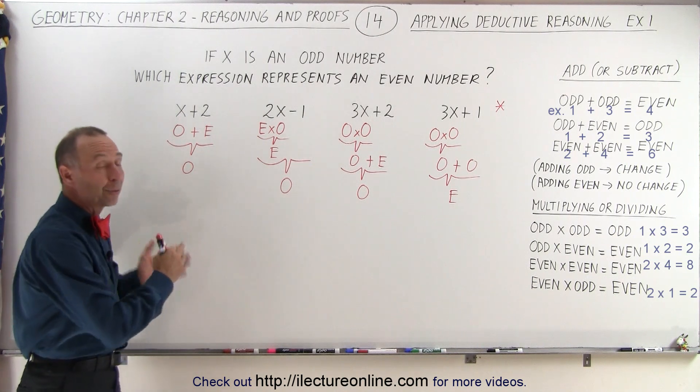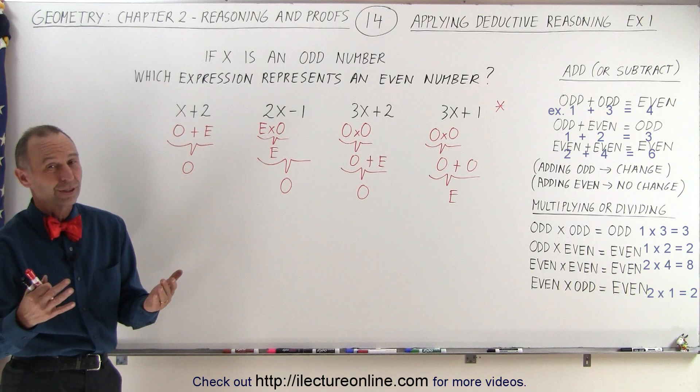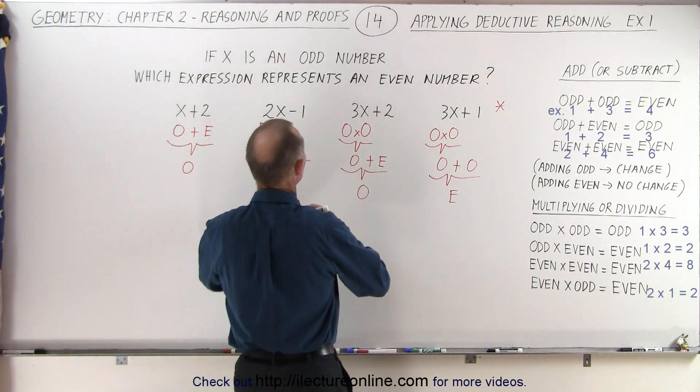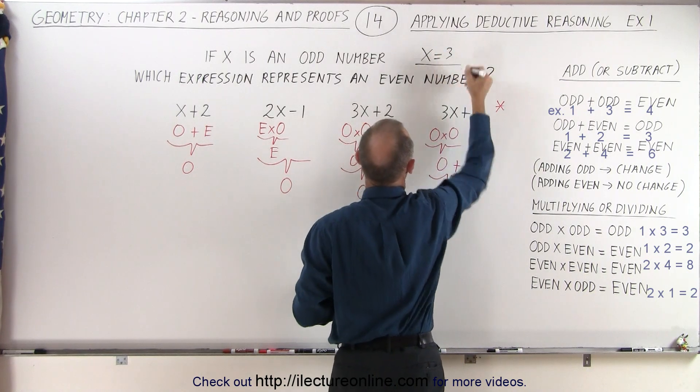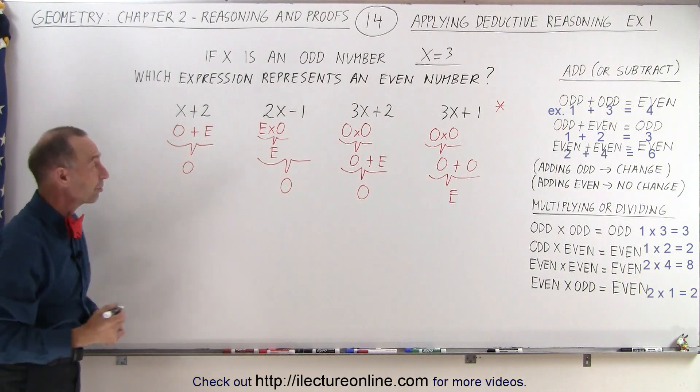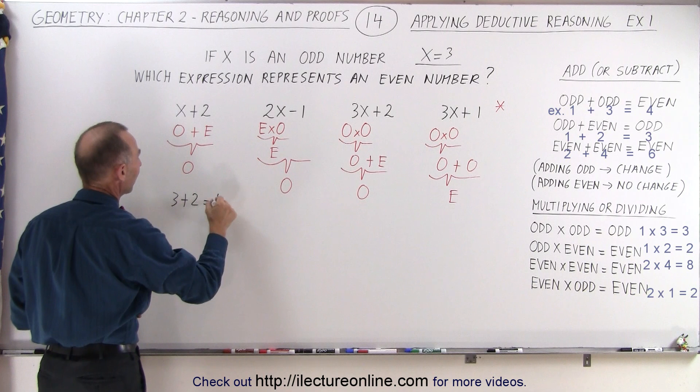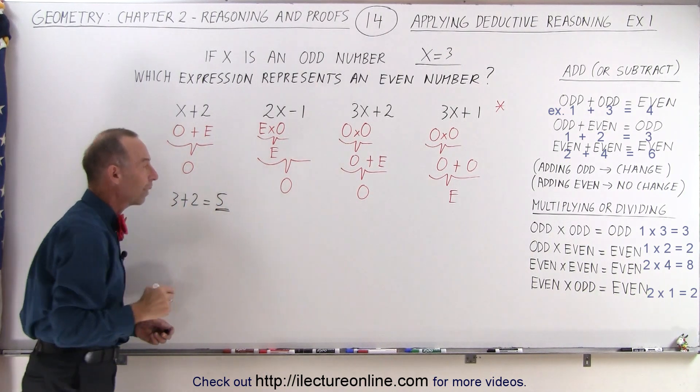So now that we think we've got the right answers, let's show some examples of each one just to make sure it makes sense. So what we're going to do is we're going to assume that x is equal to 3, because x is supposed to be an odd number. If x is equal to 3, let's see what we get in each of these expressions. So here we get 3 plus 2 is equal to 5. And sure enough, 5 is an odd number, so that looks like it's correct.